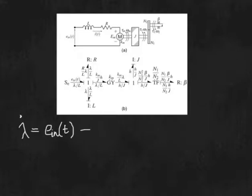We will subtract R divided by L times lambda because the power is out of the junction in the top bond. And we will subtract KM over J times H on the right bond because the power is out.